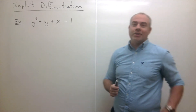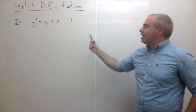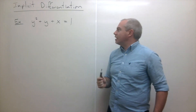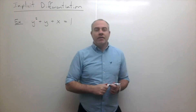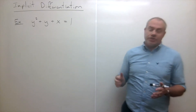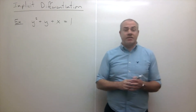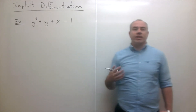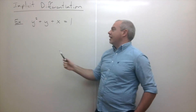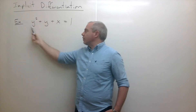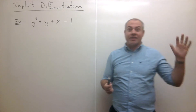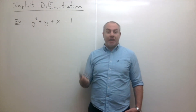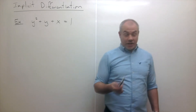Welcome back. Today I'd like to talk about implicit differentiation. To start, here's a curve: y squared plus y plus x equals one. This is not necessarily a function — notice there's a y squared. I could think of it as several functions. If I could solve it so that y equals a bunch of x stuff, that would be easy enough. But what if I can't? That's where implicit differentiation comes in.